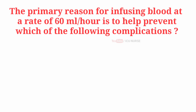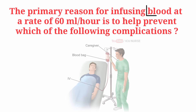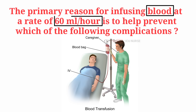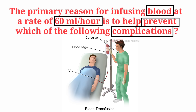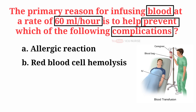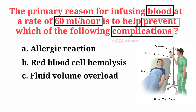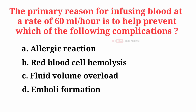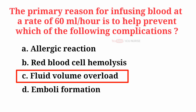The primary reason for infusing blood at a rate of 60 ml per hour is to help prevent which of the following complications? A. Allergic reaction. B. Red blood cell hemolysis. C. Fluid volume overload. D. Emboli formation. And the correct answer is C. Fluid volume overload.